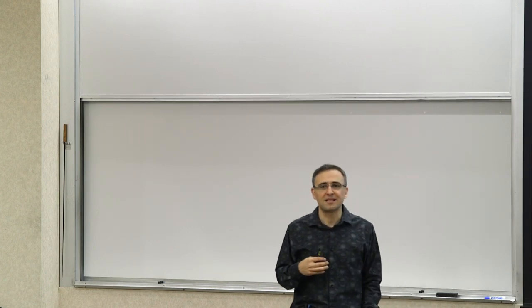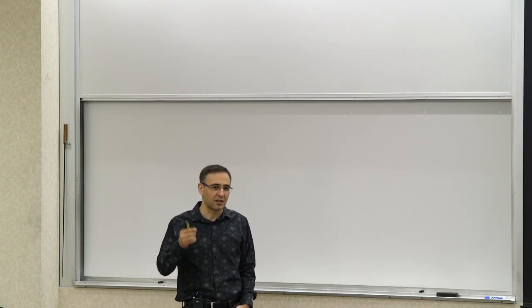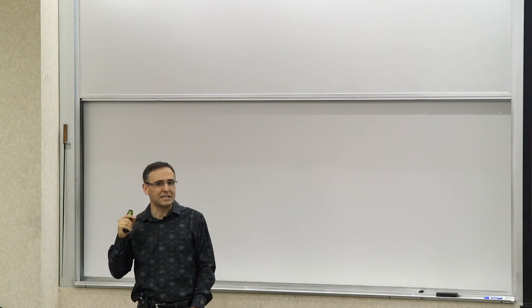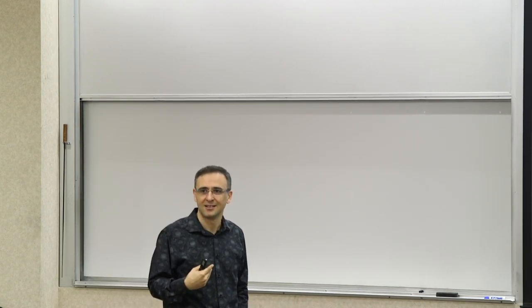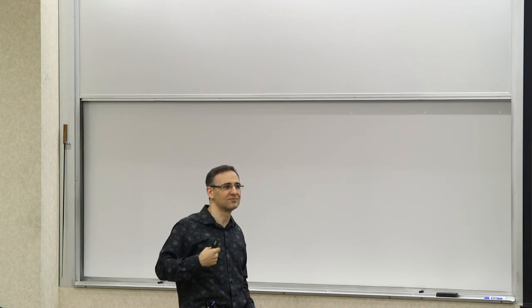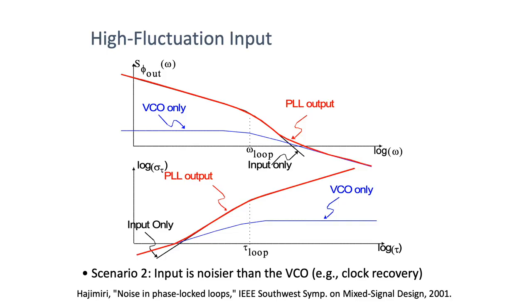Scenario one is the low-fluctuation input — a clean input, like a frequency synthesizer. Can you think of the opposite? Clock recovery — the input is incredibly noisy because the data is random. You have a high-noise reference coming in and you're trying to generate a clean clock off of that dirty input. That's the high-fluctuation input scenario. Now the input reference behavior is stronger than the VCO. You're trying to use the VCO to clean the input, and the two curves have just shifted with respect to each other.